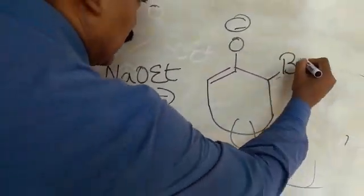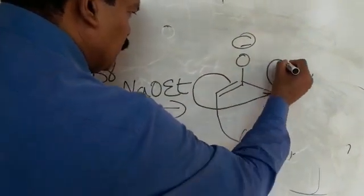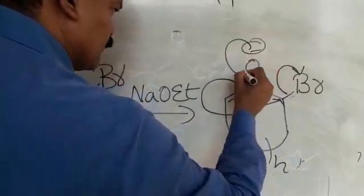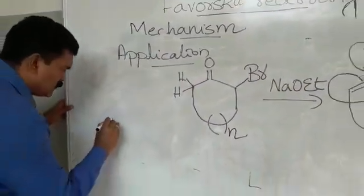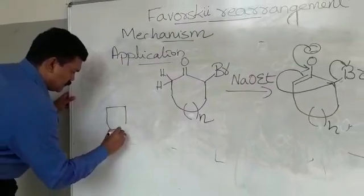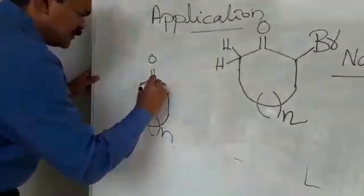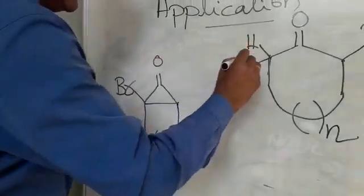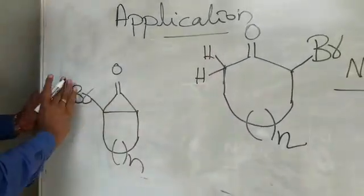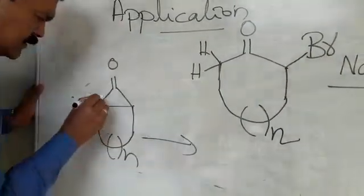And then what happens is, the enolate rearranges to form the cyclopropanone ring system. So this is the cyclopropanone ring system that you can see here. This is a cyclopropanone ring system.